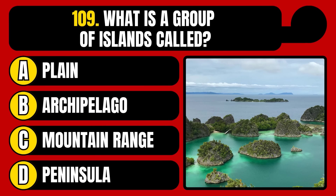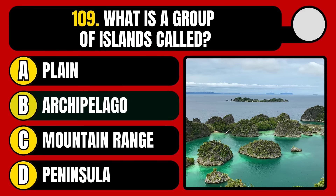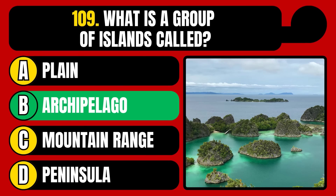What is a group of islands called? Plain, archipelago, mountain range, or peninsula? The correct answer is option B, archipelago.